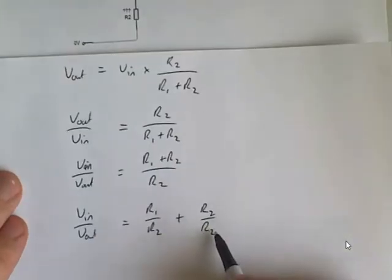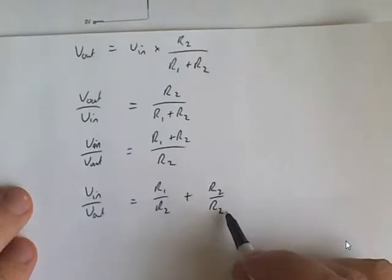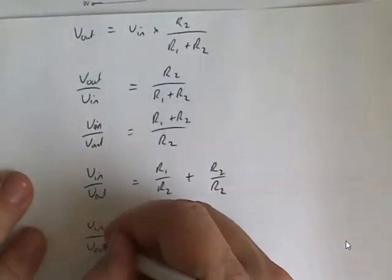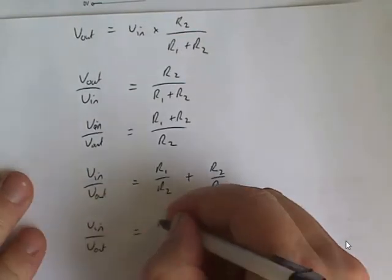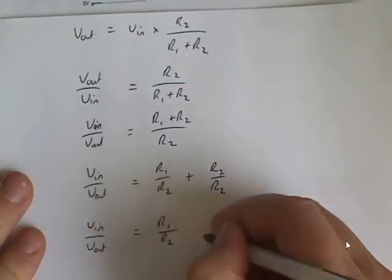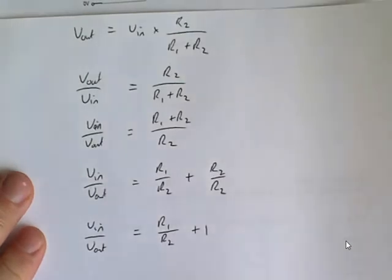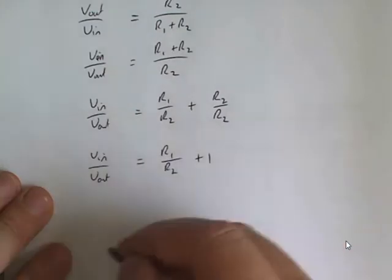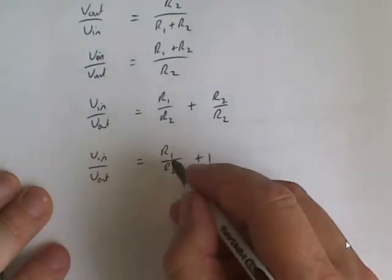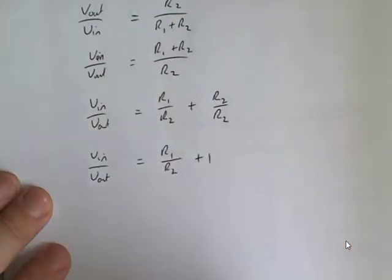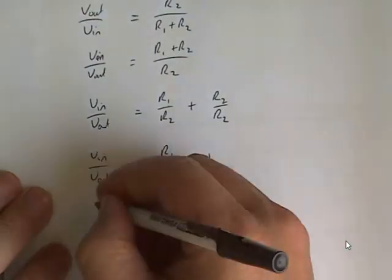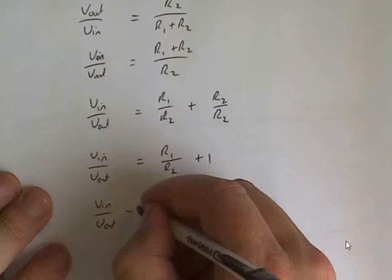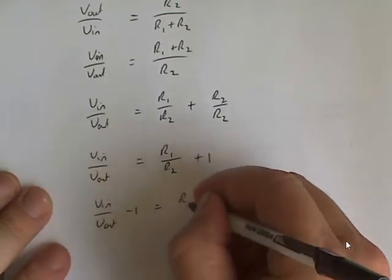R2 over R2 is simply 1. So I've got V in over V out equals R1 over R2 plus 1. Keep rearranging to get, I want to have R2 on its own. So V in over V out minus 1 equals R1 over R2.